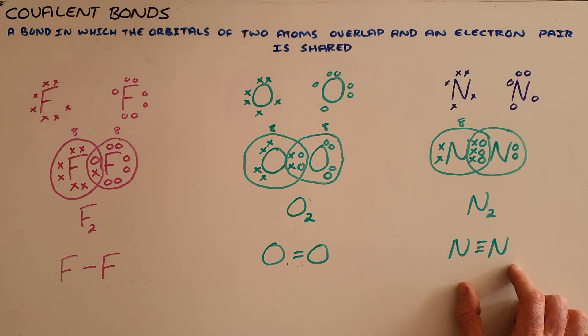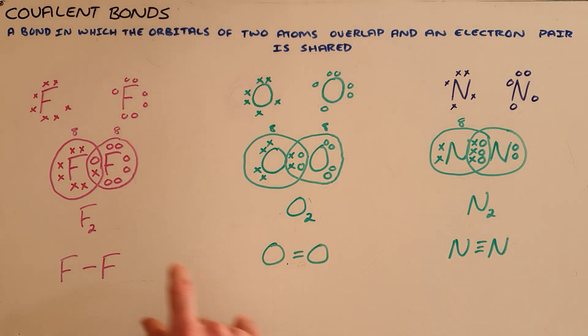And then the triple bond is the strongest of these three bonds because there are now three pairs of electrons that are holding these atoms together. And so we say triple bonds are stronger than double bonds, which in turn are stronger than single bonds.